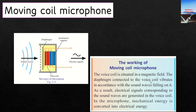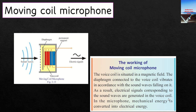The diaphragm connected to the voice coil vibrates in accordance with the sound waves falling on it. When we talk, the vibrations of our sound waves cause the diaphragm to vibrate. That creates a change in the magnetic flux, which generates an induced EMF. Electrical signals corresponding to the sound waves are generated in the voice coil.